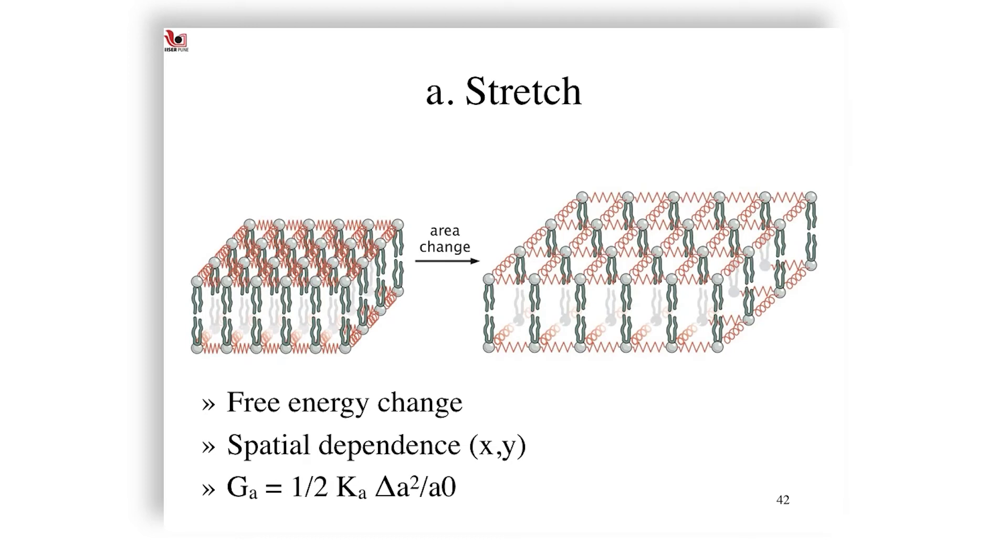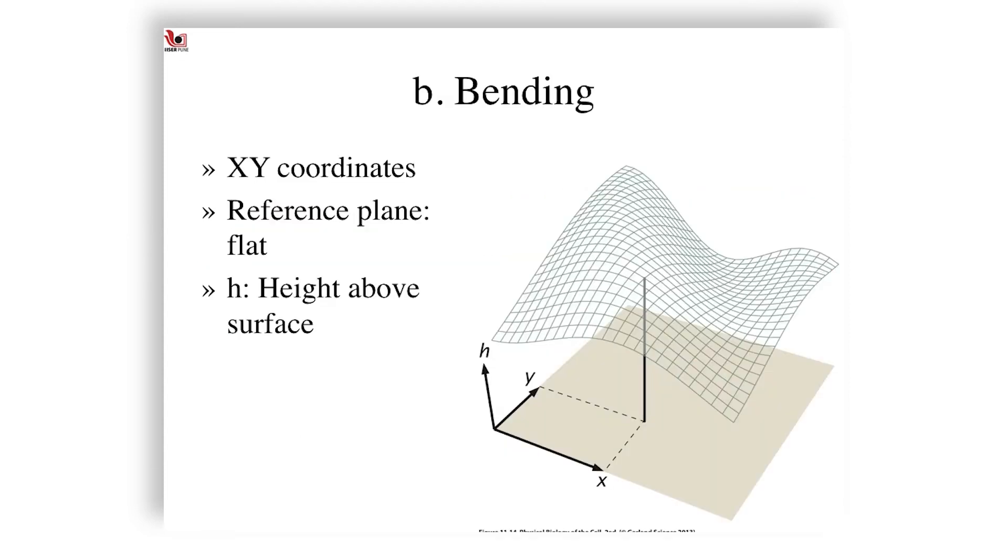In case of stretch, the expression for the free energy of deformation is the free energy Ga of area's deformation: half Ka times delta A squared upon A naught, where delta A is the change in area, A naught is the initial area, and Gstretch is the energy of stretching. In such a case, the area stretch modulus Ka is the important parameter to bear in mind—it is what determines the dynamics or the extent to which the membrane can be stretched, or the stiffness of the membrane effectively. Please note that this is analogous to your spring expression.